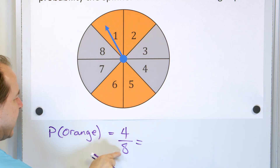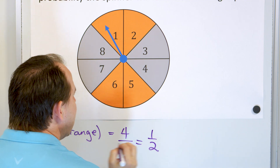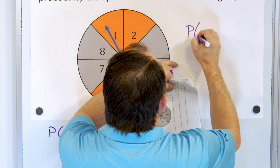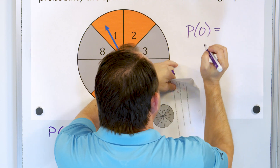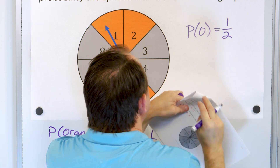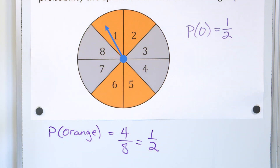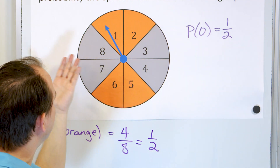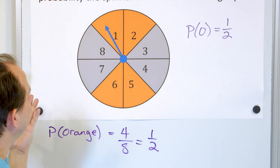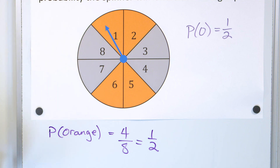Dividing top and bottom by four gives you one half. The probability of getting orange is one half, which is 0.5 or 50%. It makes sense because half of the spaces are orange — you expect to land on orange half the time and gray the other half.